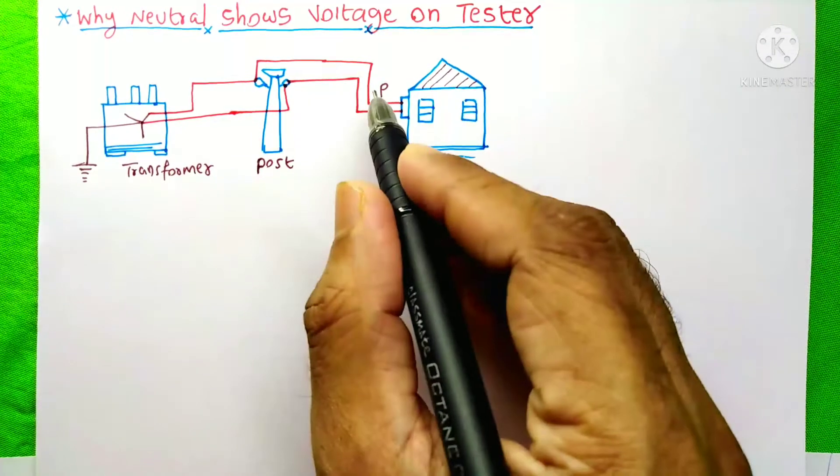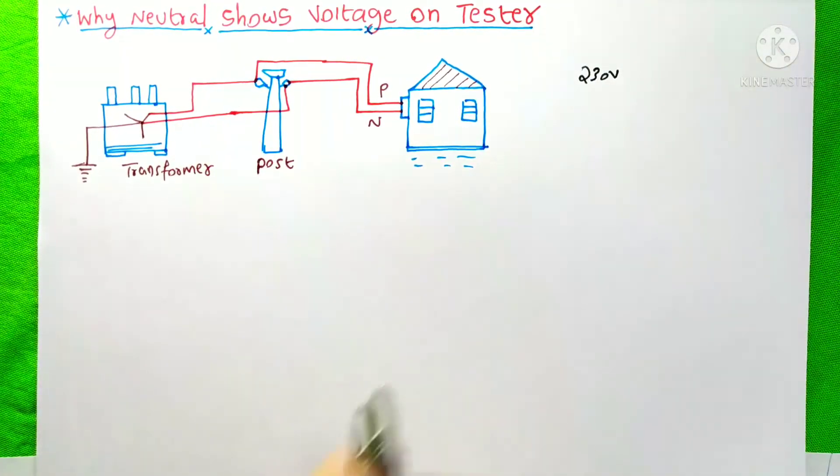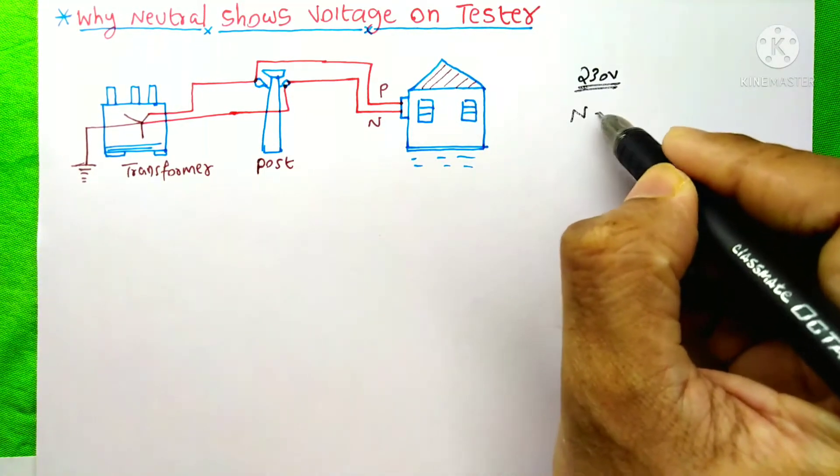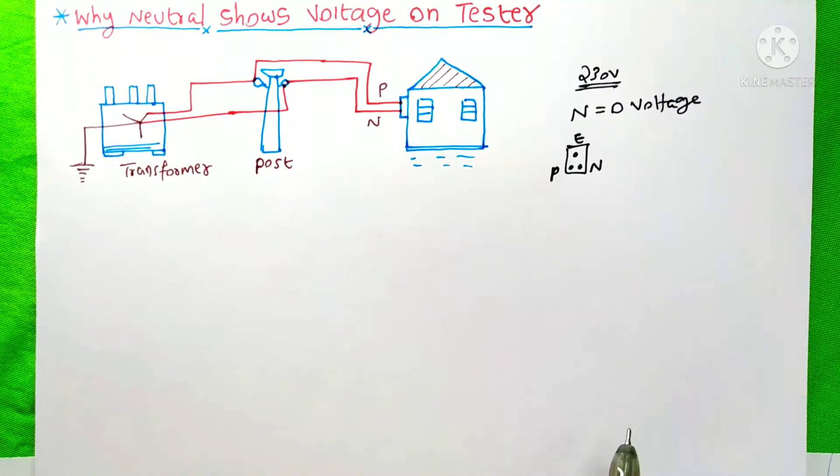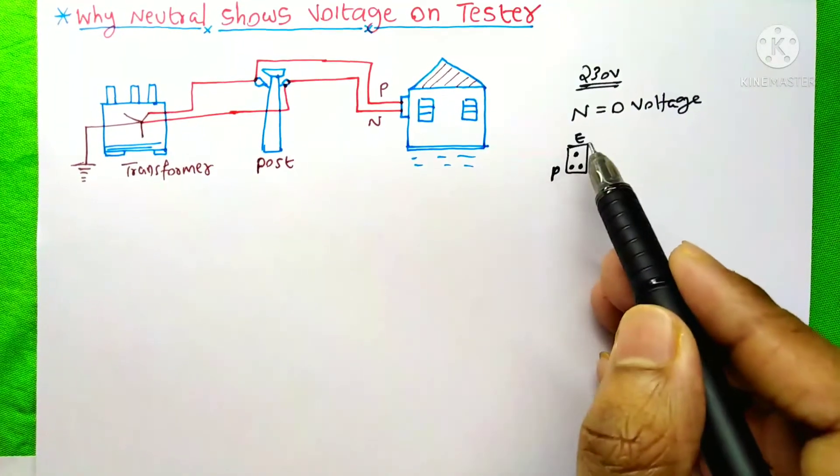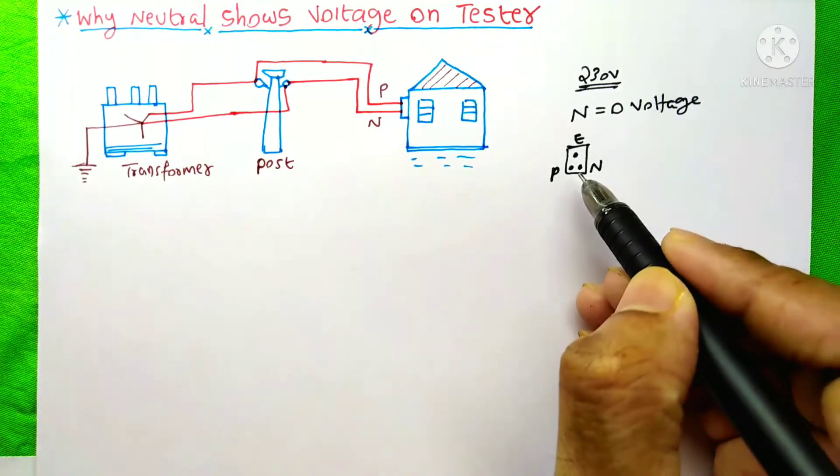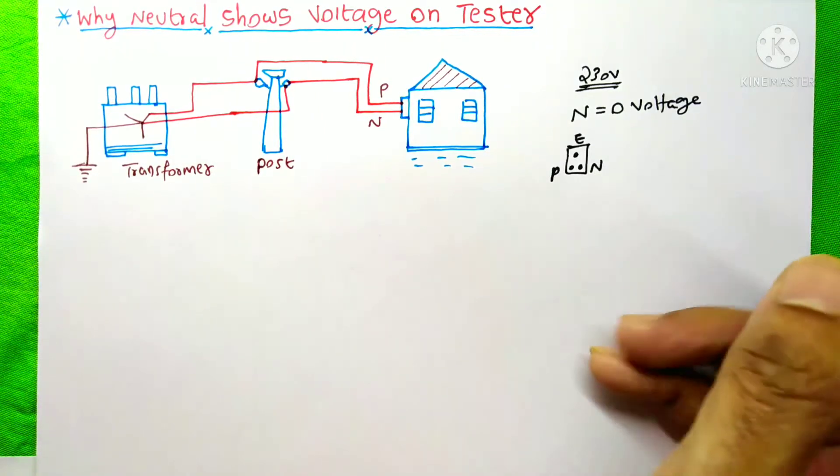In this case, our single-phase voltage is 230V. On normal condition, the phase shows this 230V and the neutral shows zero voltage. Sometimes when you check your home socket with a tester, it shows the voltage on both the phase and the neutral pin. What is the reason behind this?